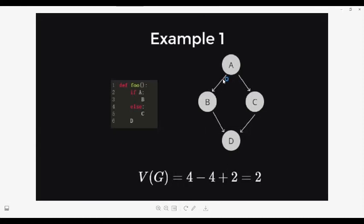The number of edges for this function is one, two, three, four. And the number of vertices is also one, two, three, four. So the cyclomatic complexity of this function is simply four minus four plus two, which is two.